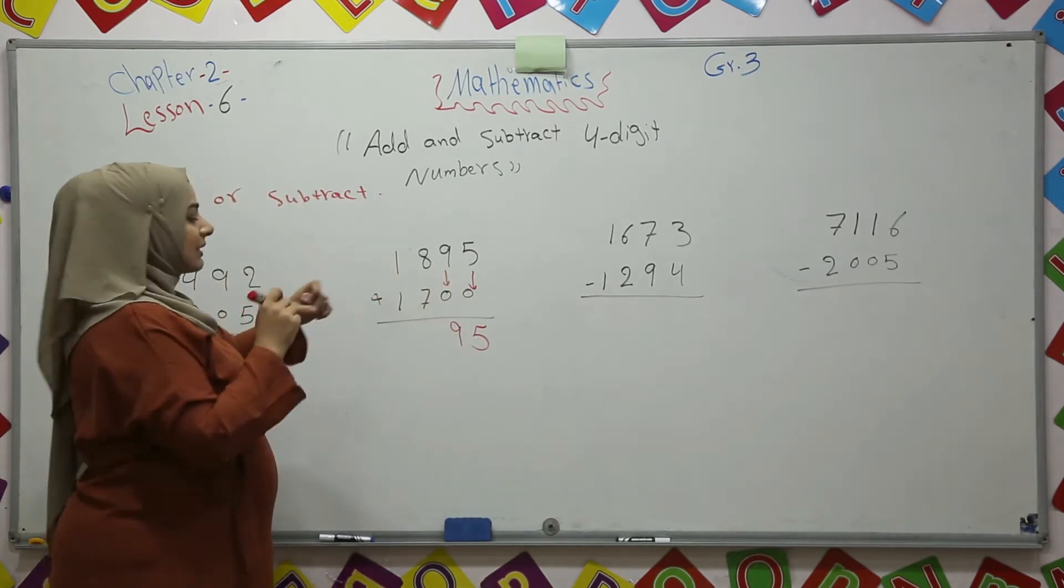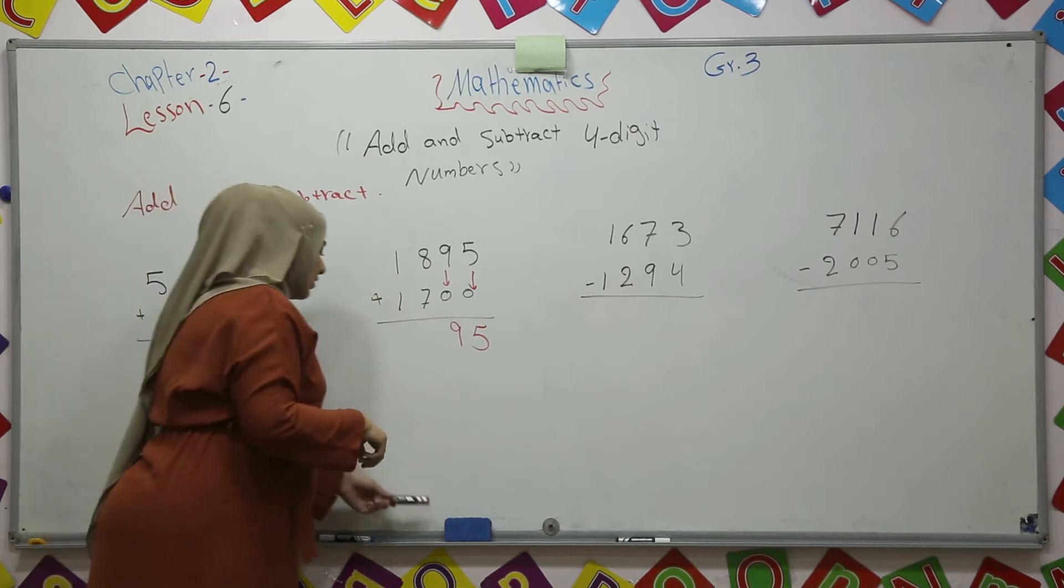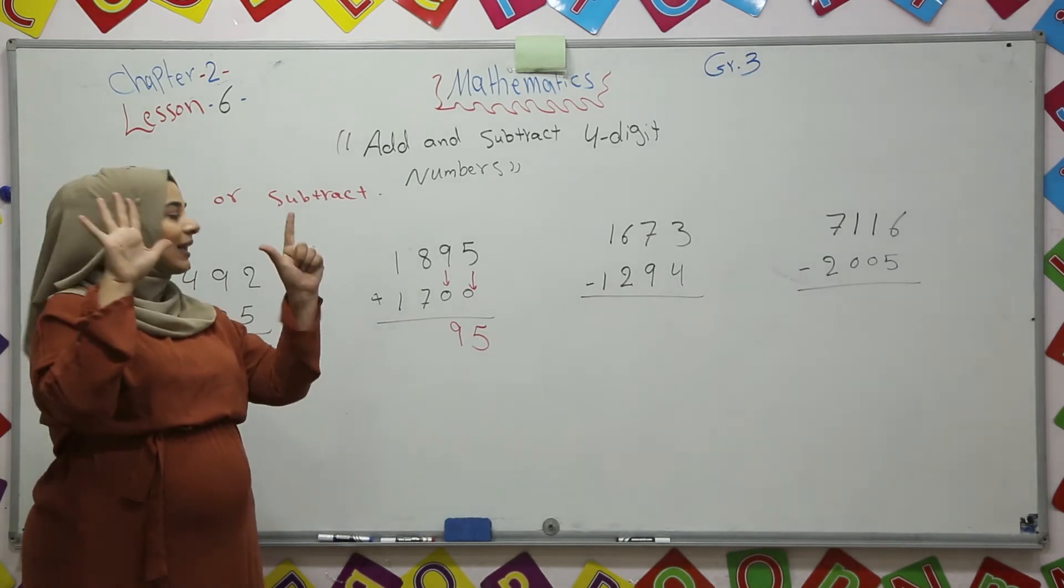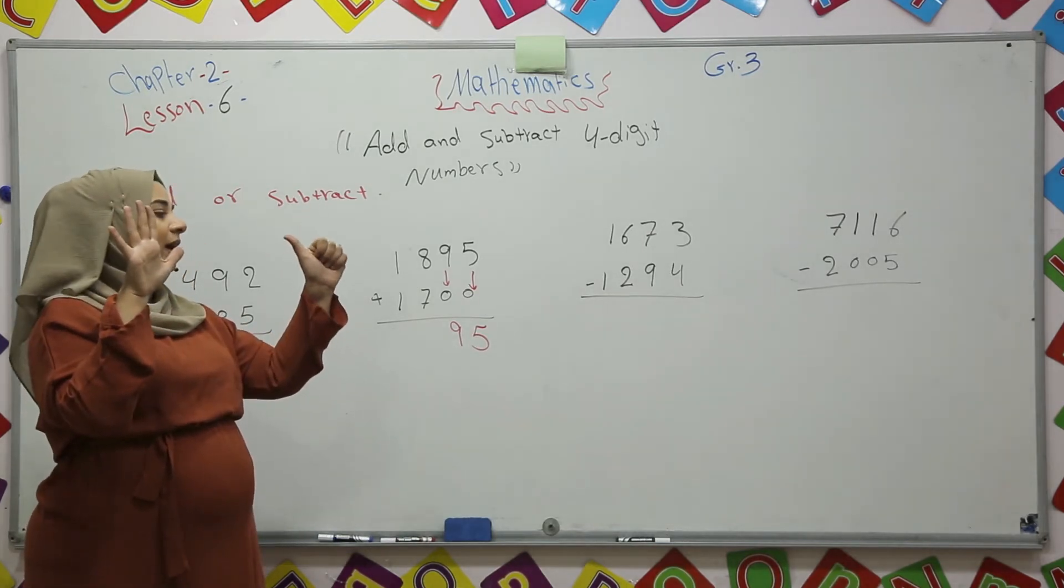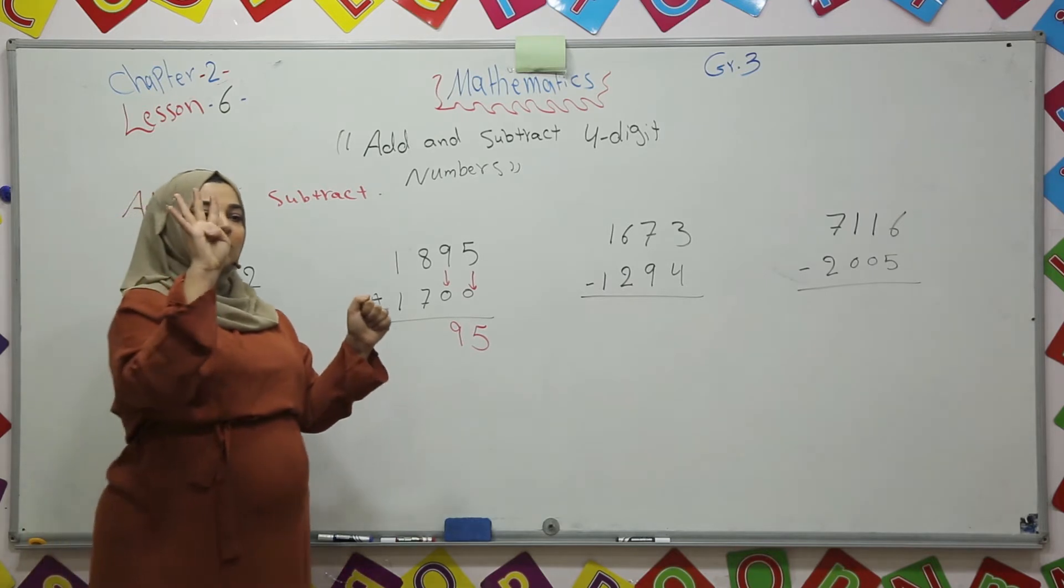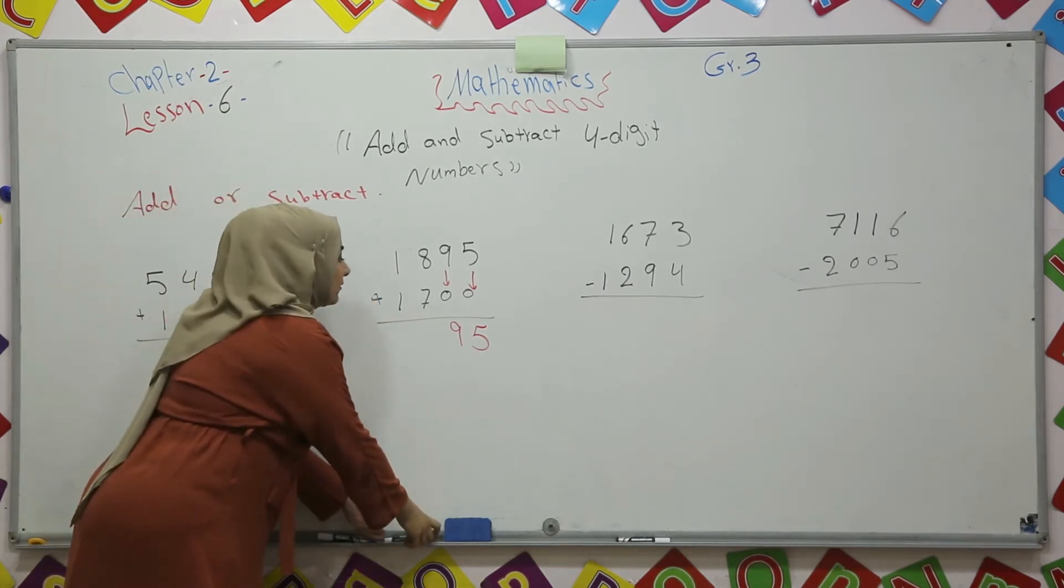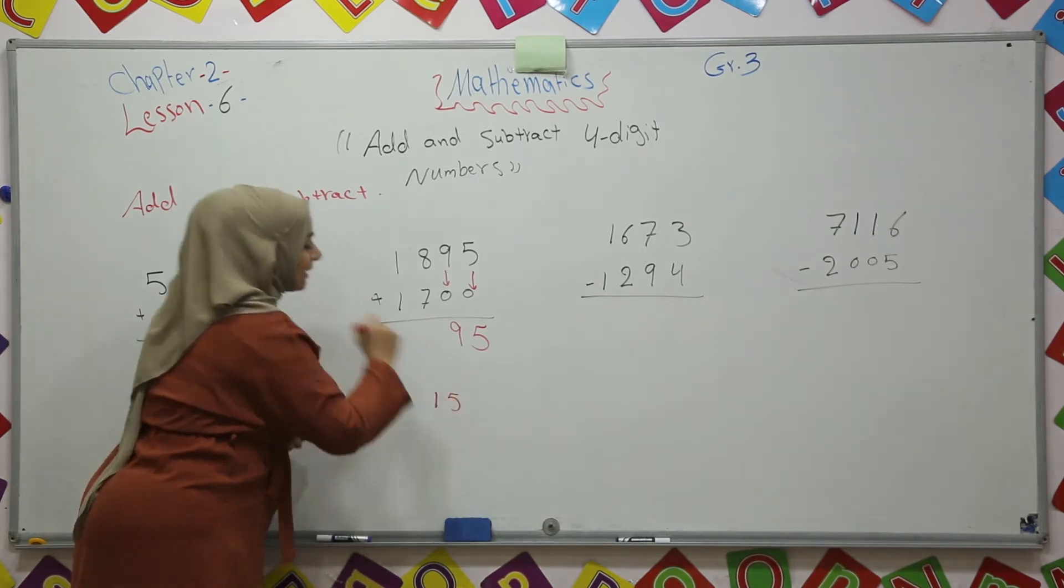8 plus 7. Greater number in your mind, smaller number in your hand. 8 in my mind, 7 in my hand. 8, 9, 10, 11, 12, 13, 14, 15. It is 15. 8 plus 7 is 15.